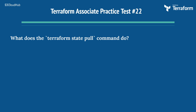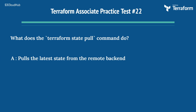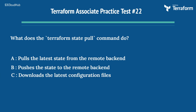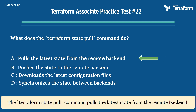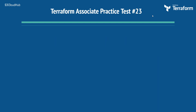The twenty-second question: what does the terraform state pull command do? Options are: A) pulls the latest state from the remote backend, B) pushes the state to the remote backend, C) downloads the latest configuration files, D) synchronizes the state between backends. The right answer is Option A, pulls the latest state from the remote backend. The terraform state pull command pulls the latest state from the remote backend.